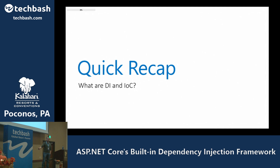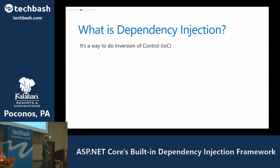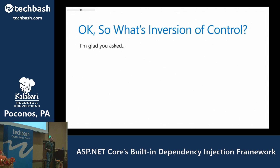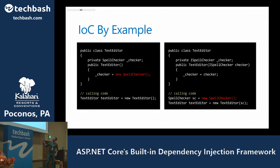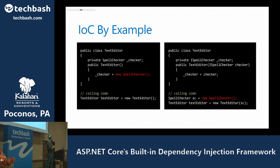So, a quick recap of DI and IOC. What is dependency injection? It's just a way to do inversion of control. So what is inversion of control? Let's look at this example: we've got a TextEditor class that has a dependency on a SpellChecker class. When you create a TextEditor, it creates its own SpellChecker inside the constructor — they're very tightly coupled. If you wanted to use a different spell checker, you'd have to go edit the code and recompile.